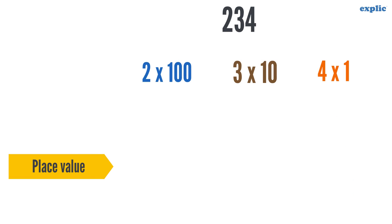In number 234, the place value of digit 2 is 200, place value of digit 3 is 30, and place value of digit 4 is 4.